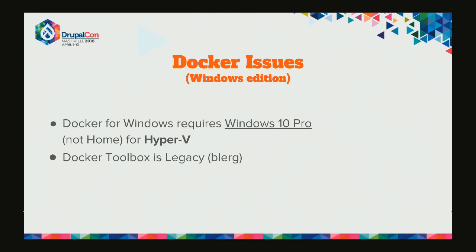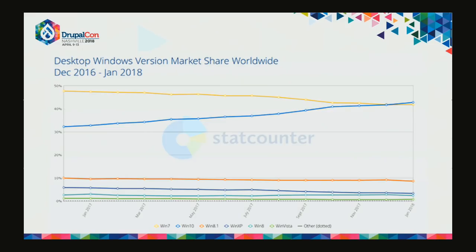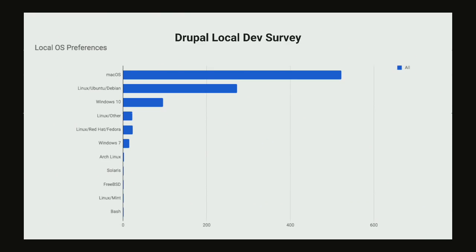Other Docker issues with Windows: you want to be on the latest version of Docker native for Windows, but that only runs on Windows 10 Pro because it has Hyper-V - technology that speeds up virtualization and allows you to run Ubuntu and other OSes on Windows. The old Docker Toolbox is legacy, slow, and terrible. The good news is Windows 10 has just surpassed Windows 7 in market share, so most professional developers hopefully have Windows 10 Pro. Better news: not many people use Windows anymore.